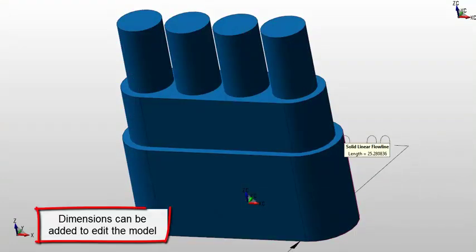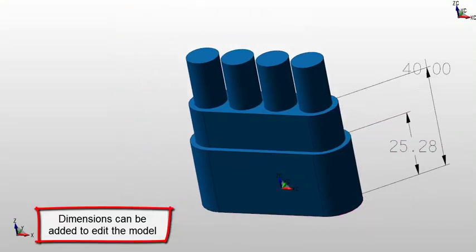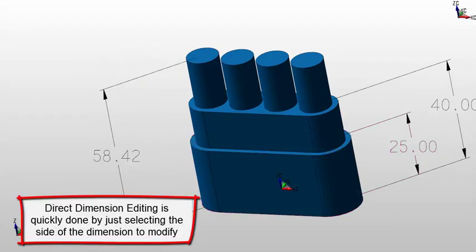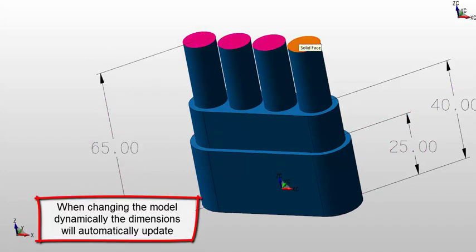You can add dimensions directly on your model by using the Quick Dimension tool. Using the direct dimension editing is quick and simple. Your dimensions appear by simply selecting the side of the dimension that you want to modify.